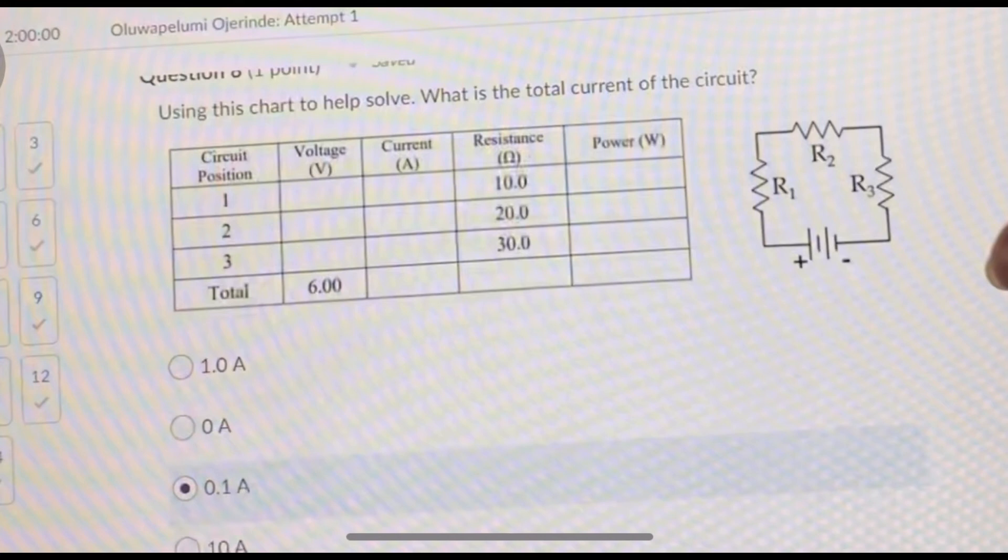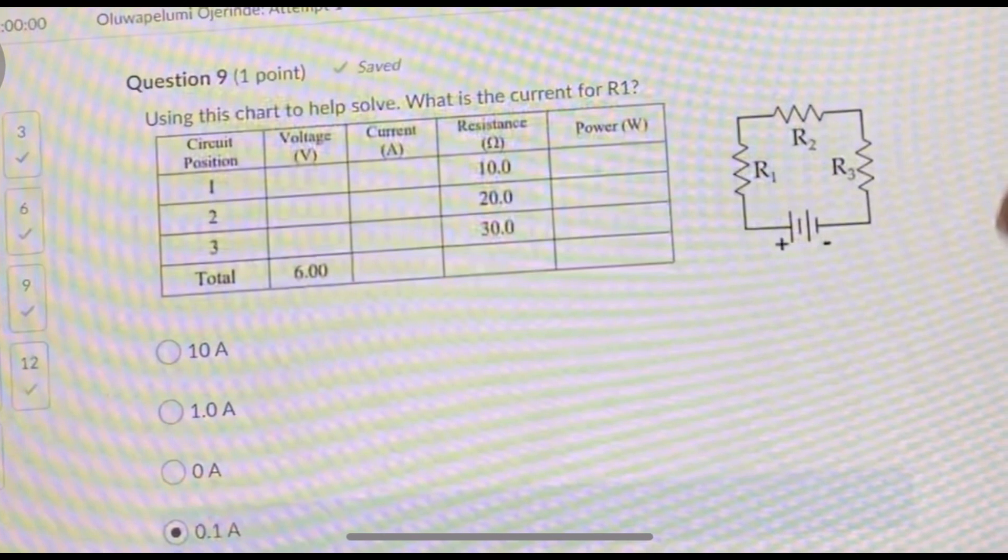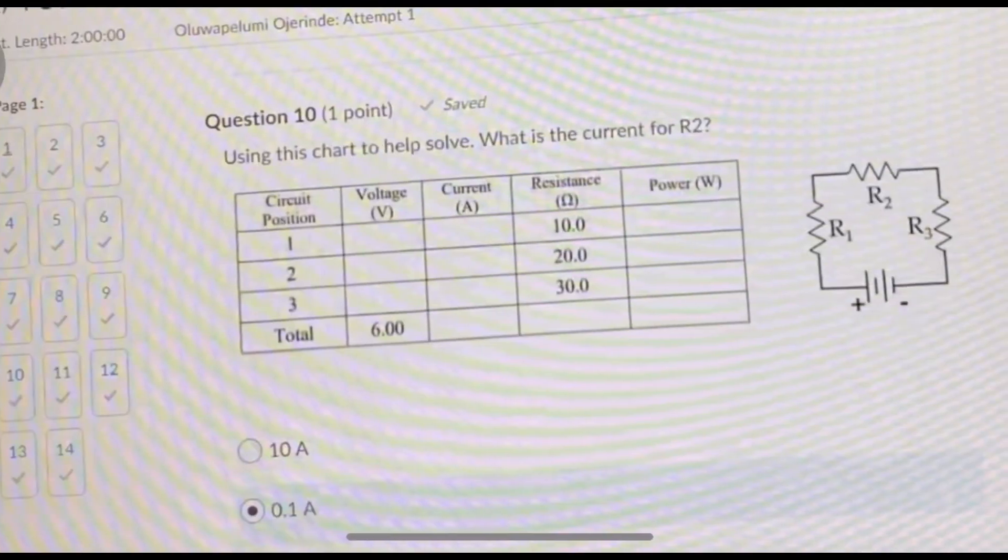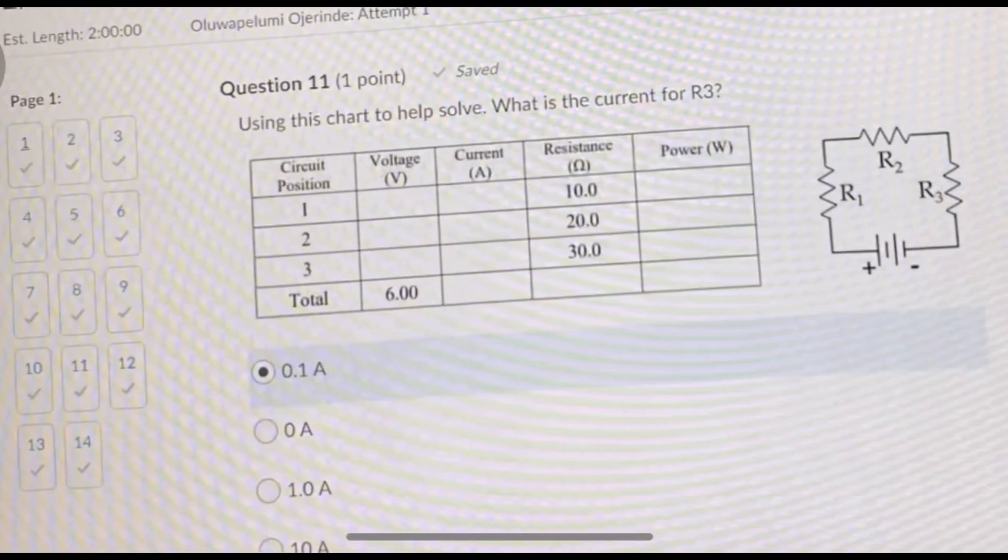Number nine: what is the current for R1? If we just solved the current and figured out that it's 0.1 for the total, it's going to be the same current all throughout the whole circuit. At every single position your current is going to be 0.1. So this one's asking for R2, the next one's asking for R3. It's always going to be 0.1. Don't worry about it.